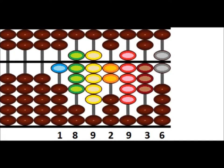Abacus is set to 1892936. To add 7263901, we will start from the units, followed by the tens, the hundreds, and so on, which is from the smallest value to the largest values.